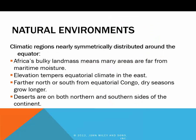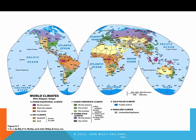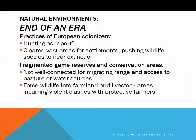Climatic regions in Africa are nearly symmetrically distributed across the equator. Elevation tempers equatorial climate in the east, and farther north or south from equatorial Congo, dry seasons grow longer. Deserts are on the northern and southern sides of the continent. Our climate map shows that the northern part of the continent lies in the dry climate zone, and the middle and southern parts are a mix of humid equatorial and humid temperate. Destruction of the natural environment is due in large part to European colonizers who introduced the concept of hunting as sport, killing off entire populations of animals and disrupting the natural ecosystems. Many species are now near extinction.